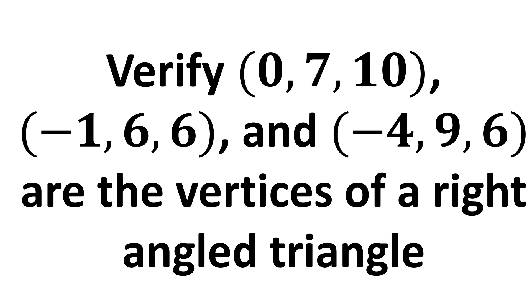In this video, we learn to verify the points (0, 7, 10), (-1, 6, 6), and (-4, 9, 6) are the vertices of a right angled triangle.